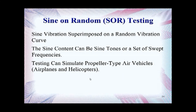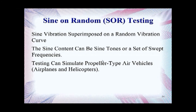What is Sine on Random Testing? Sine vibration is superimposed on top of a random vibration spectrum, so you have sine content sitting on top of your random vibration spectrum. Therefore, you have sine vibrations at certain frequencies being stimulated at the same time you are running your random vibration curve. The sine content can be sine tones or a set of swept frequencies, so you can have frequencies being swept back and forth on top of the random vibration curve while also inputting random vibration content into the shaker.